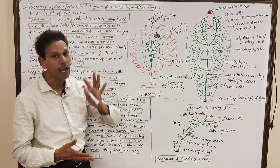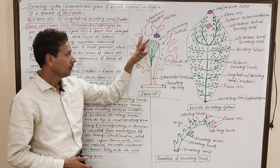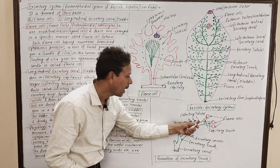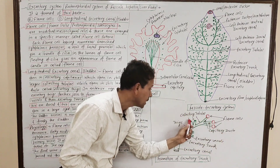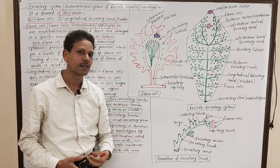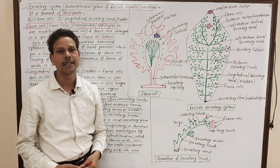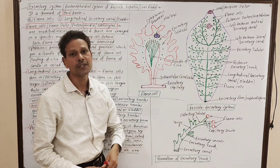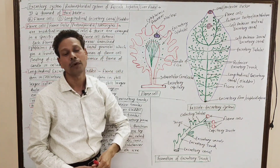Dear students, the primary urine is produced by these flame cells. From the primary urine, the useful substances are reabsorbed by the excretory capillaries as well as the collecting tubules — useful substances like amino acids, sugars, water, and ions. The final urine formed in this excretory system is then removed through the excretory pore, or nephridiopore.